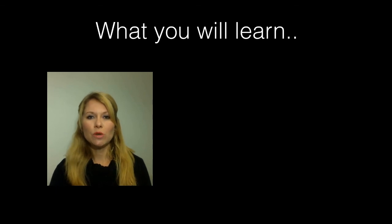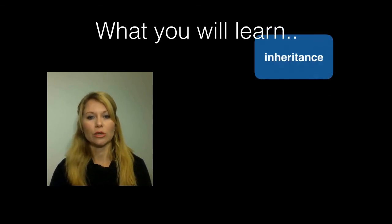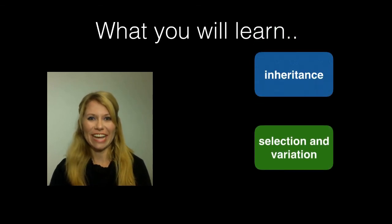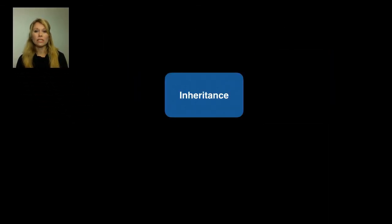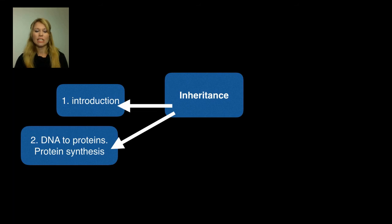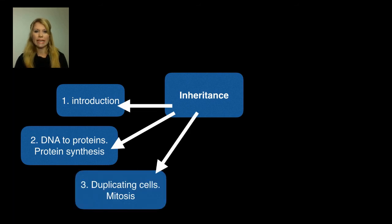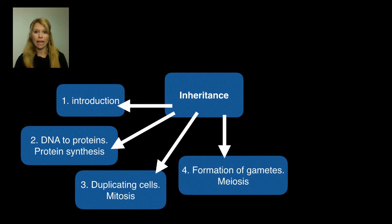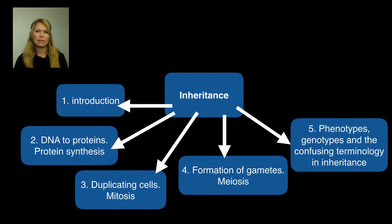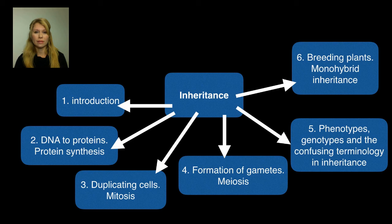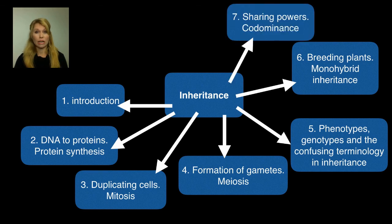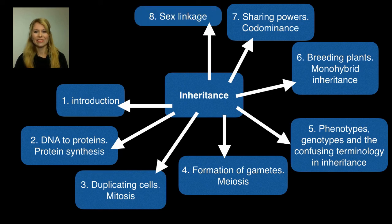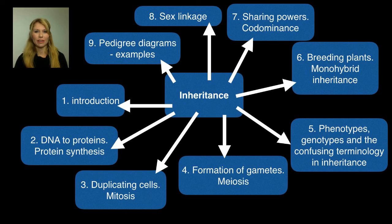There are two big topics covered in the course: inheritance and selection and variation. For inheritance, I've done short subtopics using videos as lectures. These include an introduction, DNA to proteins, protein synthesis, duplicating cells, mitosis, formation of gametes, meiosis, phenotypes, genotypes, and the confusing terminology you'll come across in inheritance, breeding plants, monohybrid inheritance, codominance, sex linkage, and examples on how to use pedigree diagrams.